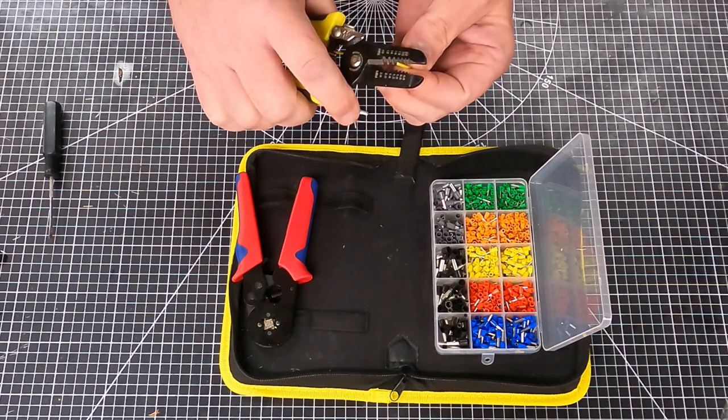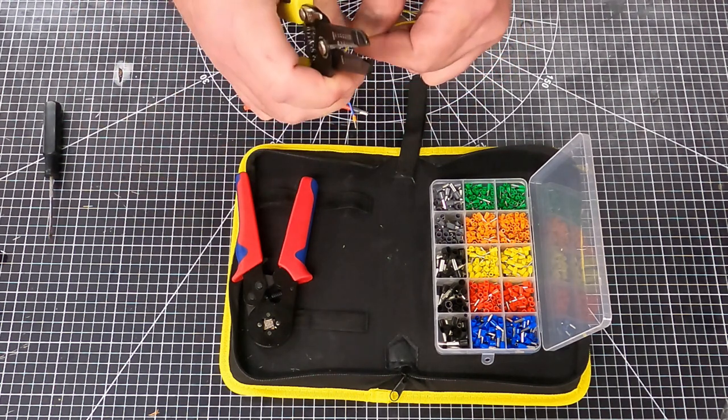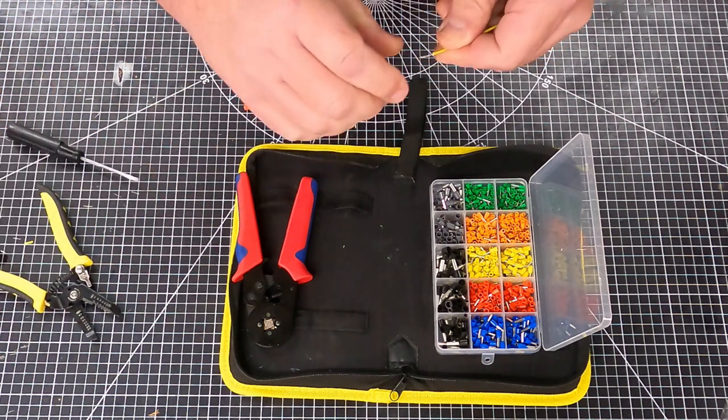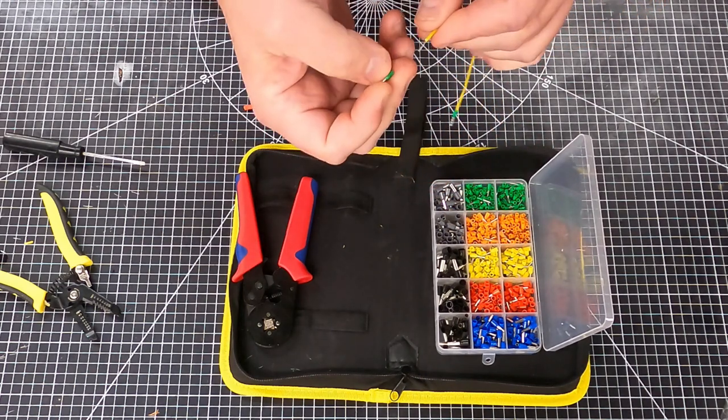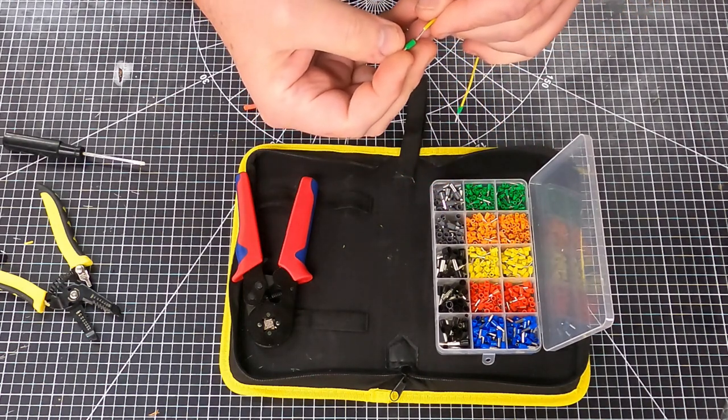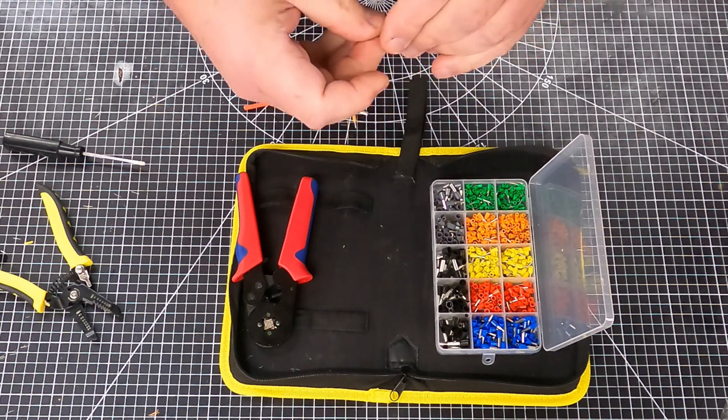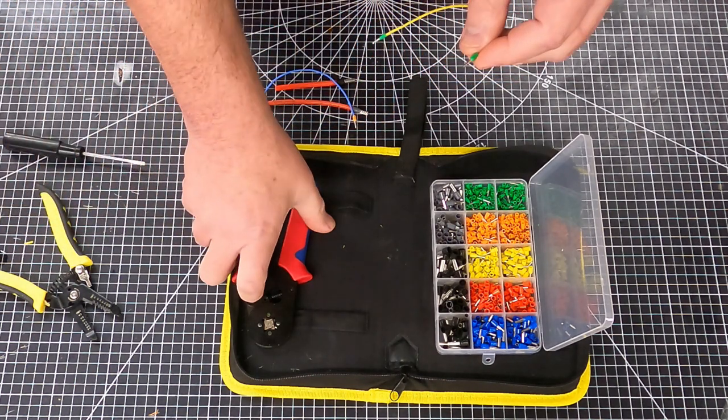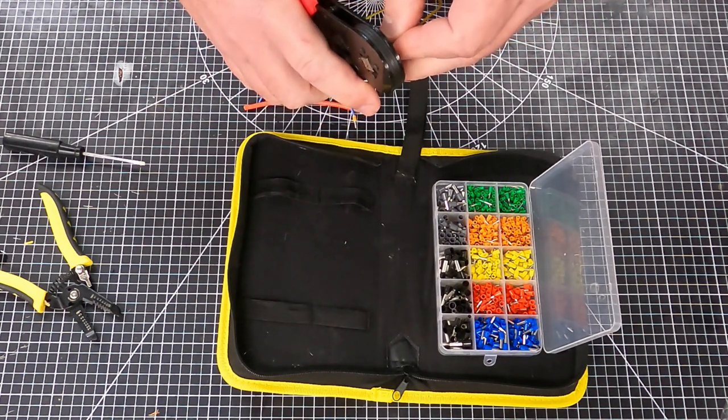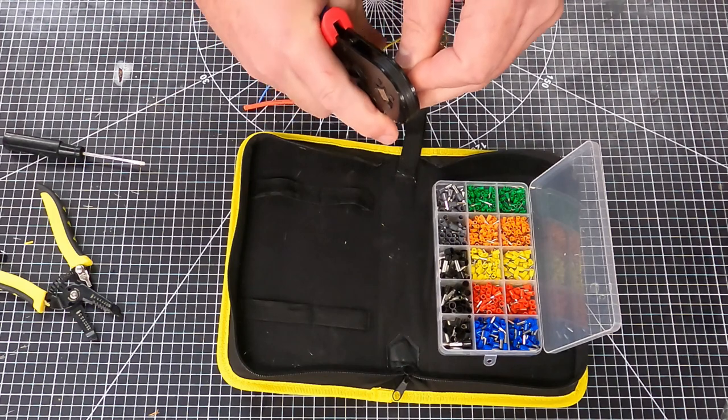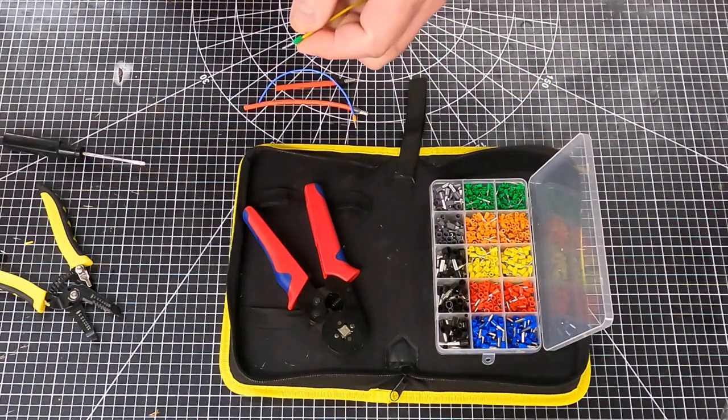So we're going to strip here at 22 gauge—that's a green ferrule. The beauty of these is that when you crimp them, you remove the ability for that stranded wire to fray as it goes into the connection. That's important when you're doing work inside of a panel or when you're using screw terminals like this.